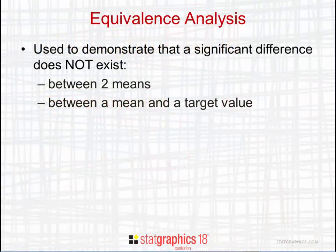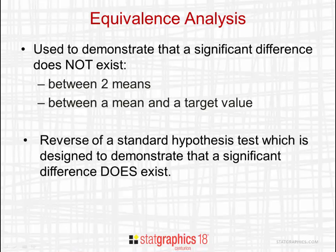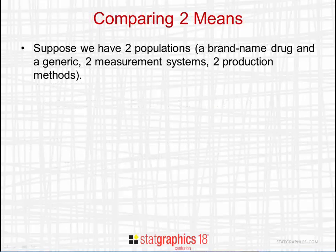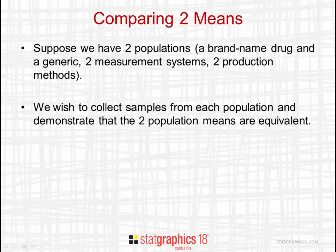Equivalence analysis is used to demonstrate that a significant difference does not exist, either between two means or between a mean and a target value. This is the reverse of a standard hypothesis test, which is designed to demonstrate that a significant difference does exist. Suppose we have two populations — patients given a brand-name drug versus a generic, measurements from two different measurement systems, or yields from two production methods. We wish to collect samples and demonstrate that the two population means are equivalent.